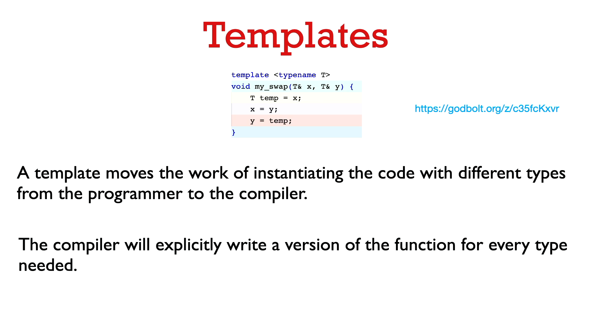Okay, so a template is not really magic. All it's doing is it's basically transferring the work of instantiating code with different types from the programmer to the compiler. So the compiler is still going to explicitly write a version of the my_swap function for every single type that's needed in your program.